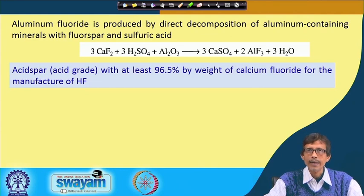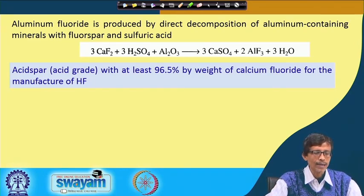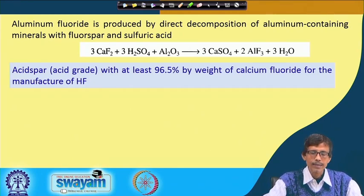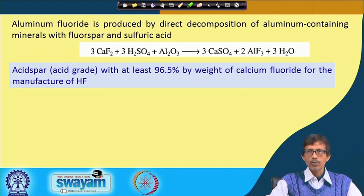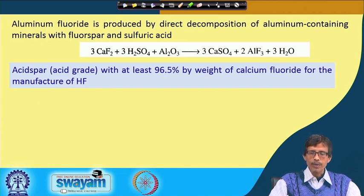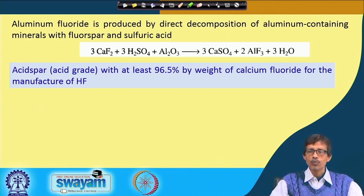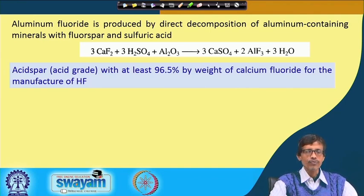Apart from metallurgical grade, there is another category called acid grade fluorspar — acid spar — which has at least 96.5 percent by weight of calcium fluoride, used for the manufacture of hydrofluoric acid. If the grade is lower, we use it for aluminum production through AlF₃ formation. If the content is higher, it is considered acid grade and used for producing hydrofluoric acid (HF).